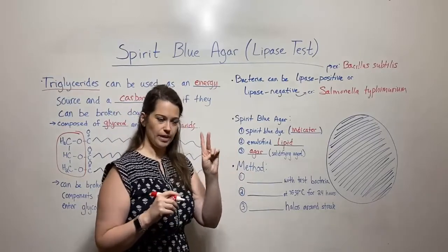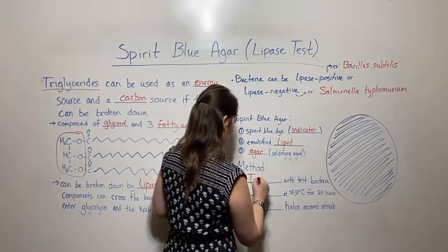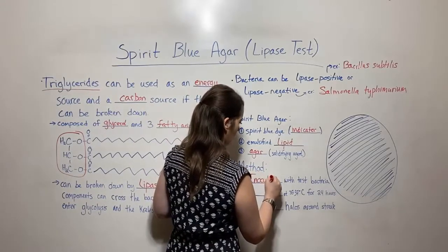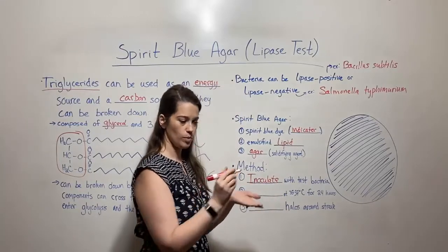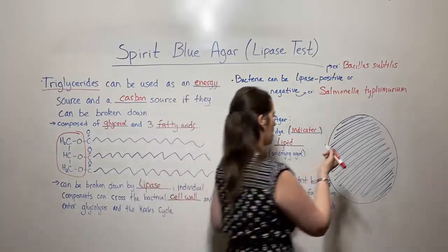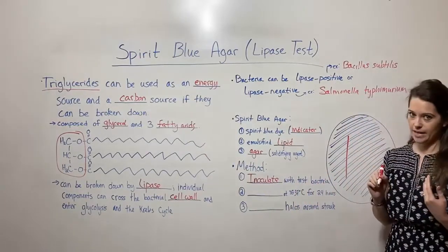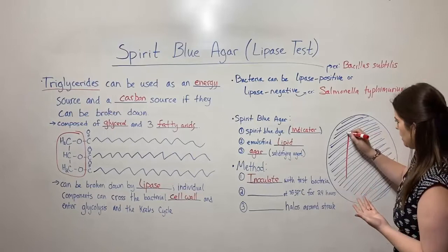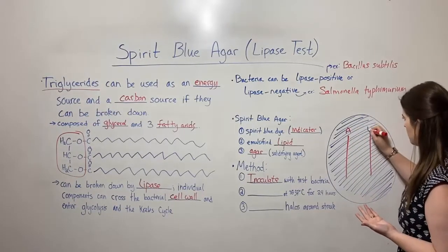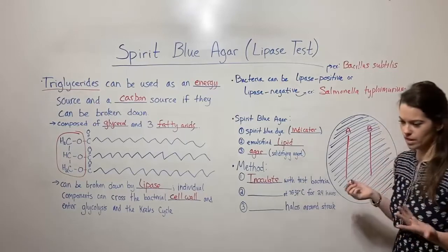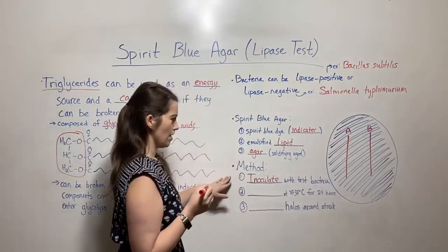The method for a lipase test is to use spirit blue agar and then do what I like to say are our three I's. First, inoculate. You inoculate with the test bacteria. That means just taking a loop, getting some of your test bacteria, and then streaking it down the plate. Maybe we do this with species A, and we do this with species B. We've got two streaks, two different types of bacteria that we're testing. That's the inoculation.